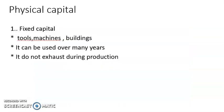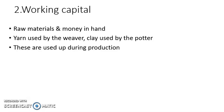Physical capital includes fixed capital — tools, machines, buildings — which can be used over many years and do not exhaust during production. Working capital is the second type of physical capital, consisting of raw materials and money in hand. For example, yarn used by a weaver and clay used by a potter are working capital. Once used, they exhaust during production.